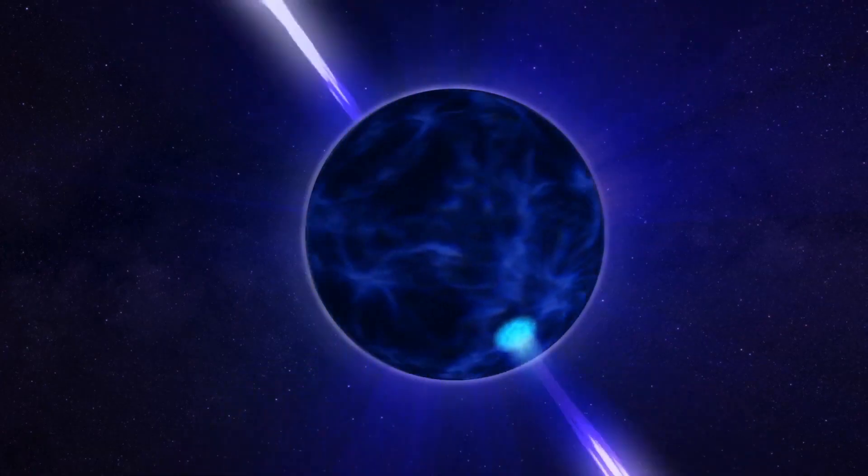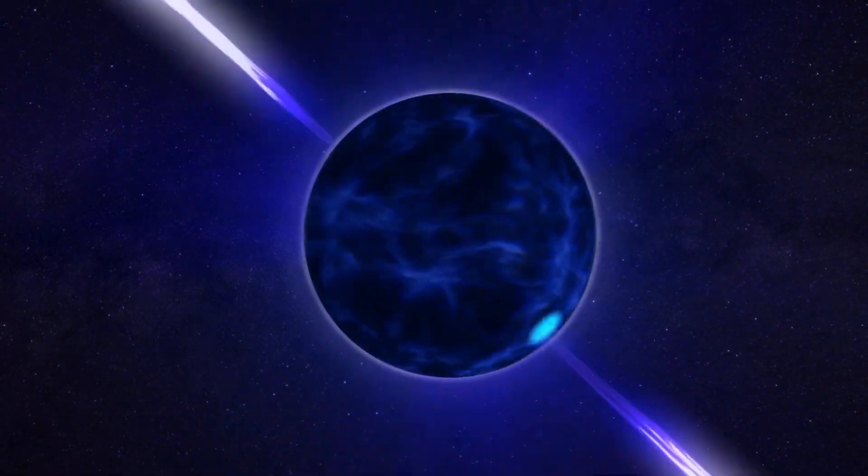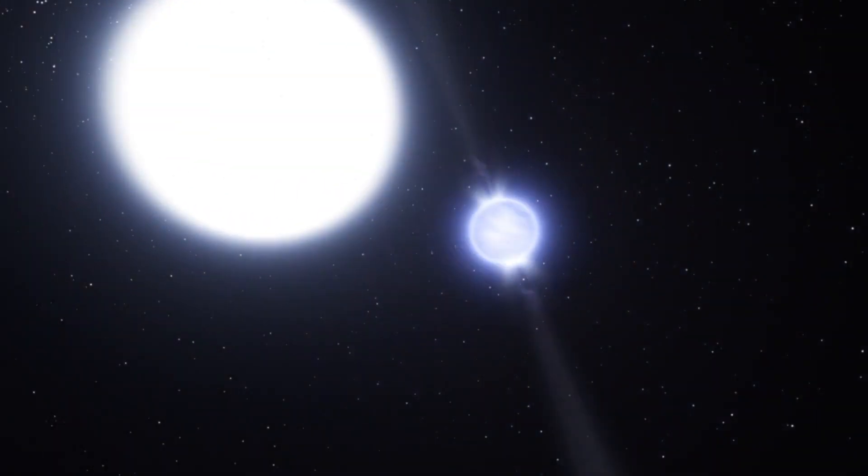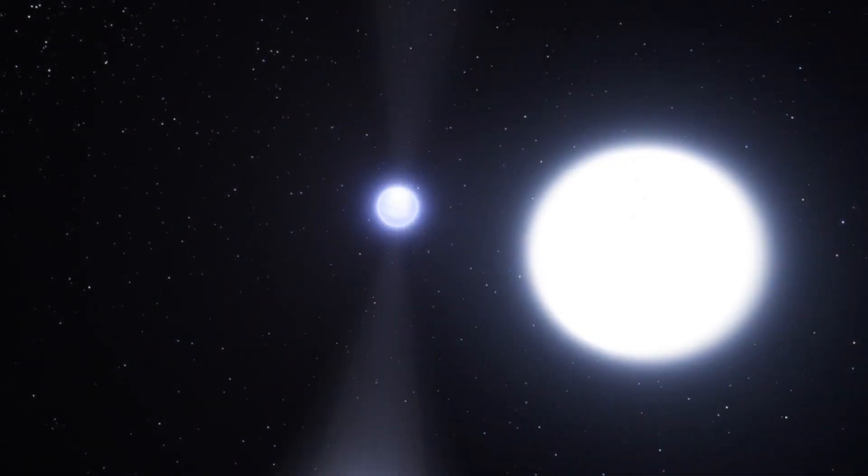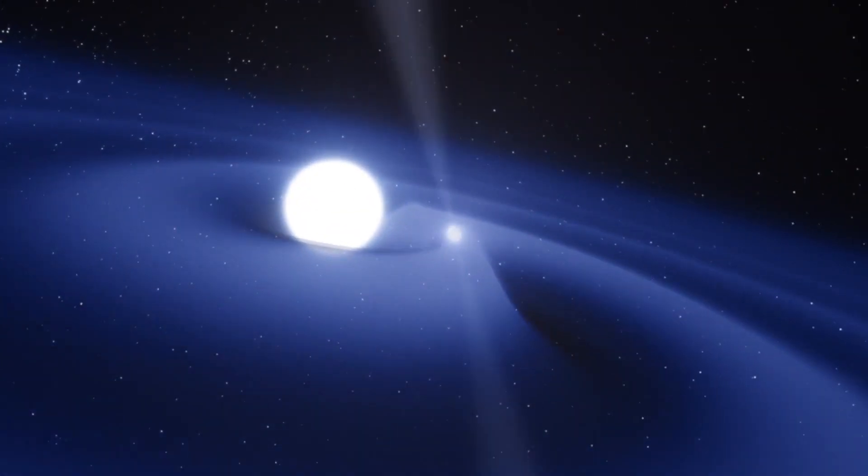But not only is its density incredible, they are one of the most violently rotating objects in our universe too. Some neutron stars are able to spin hundreds of times per second, emitting beams of radiation that can be observed as pulses of light, giving them the name pulsars.